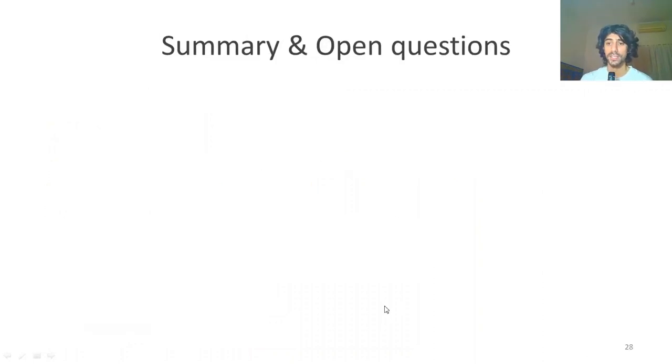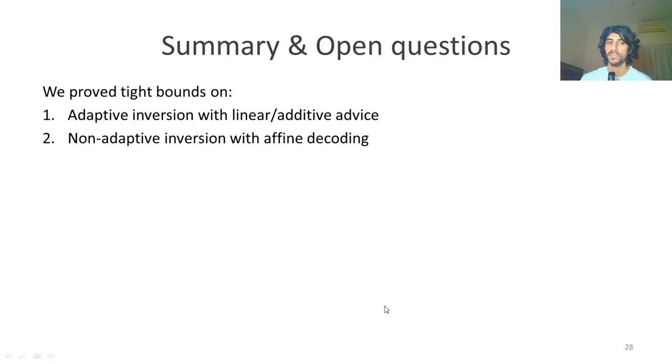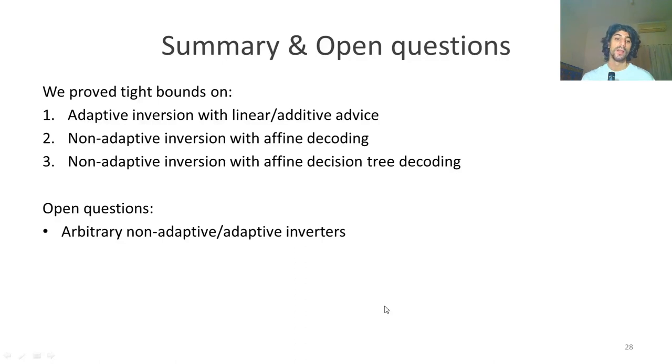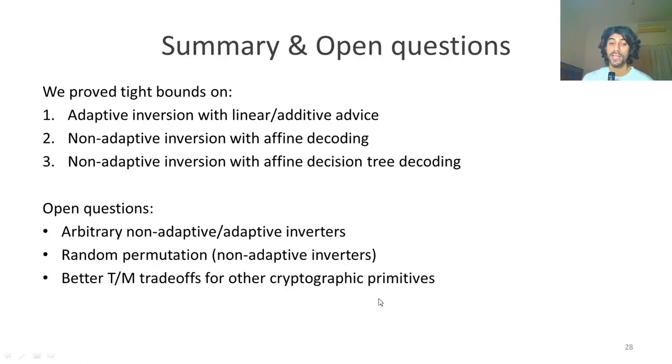Just to finish off, let's do a short summary. We've shown new bounds on adaptive inversion with linear or additive advice, non-adaptive inversion with affine decoding, and non-adaptive inversion with affine decision tree decoding. Some main open questions that remain: how can we deal with arbitrary non-adaptive or adaptive inverters, since there's still a huge gap for the arbitrary case. Also, how about random permutation for non-adaptive inverters? Because in the adaptive case, we do find there is a difference. And finally, to find better time-memory trade-offs for other cryptographic primitives which can also use this. Thank you very much for listening, and you're welcome to check out our paper. I hope you enjoy it and that it's clear for you, and have a good day.